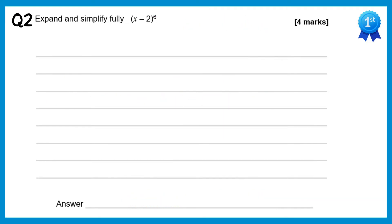This time we have a bracket raised to the power 6, so we need the sixth row of Pascal's triangle: 1, 6, 15, 20, 15, 6, 1. If we compare this to (a+b)ⁿ, then x is equal to a and negative 2 is equal to b.